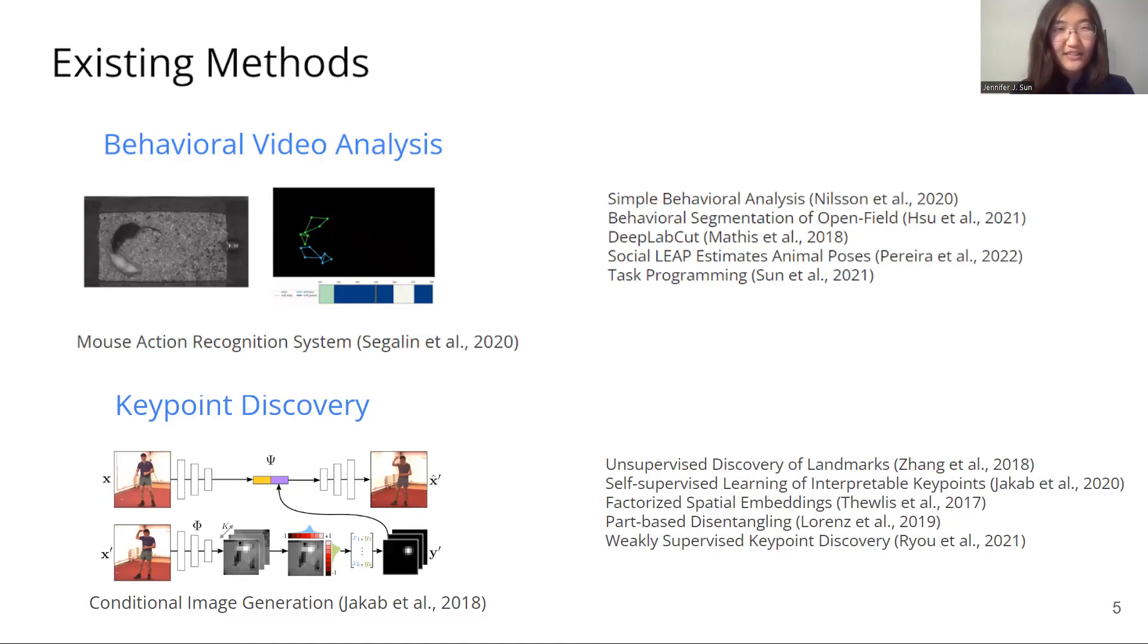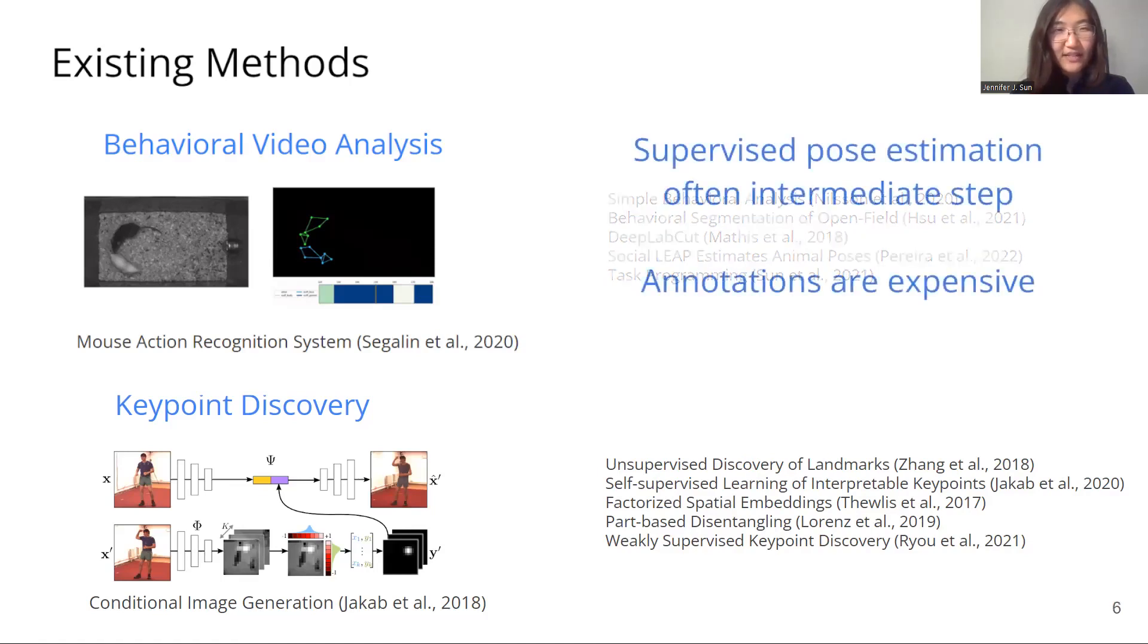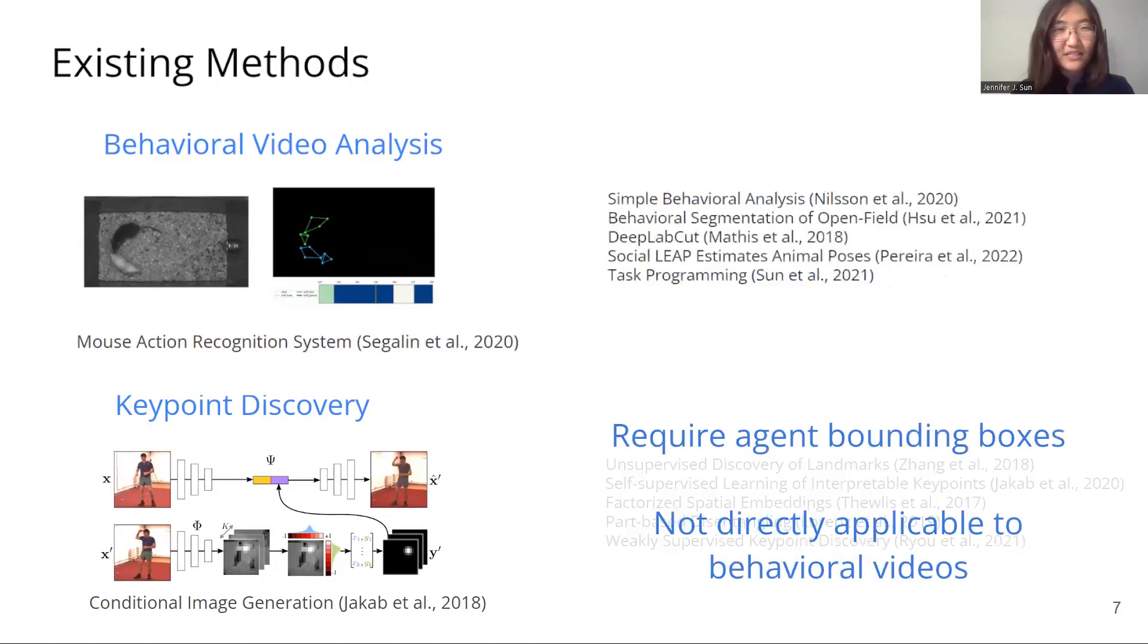To the best of our knowledge, there have not been studies at the intersection of these areas. Behavioral video analysis generally use supervised pose estimation, requiring potentially time-consuming or expensive keypoint annotations. On the other hand, many works in keypoint discovery require agent bounding boxes, which requires a trunk detector on real-world videos. This is especially difficult for multiple agents.